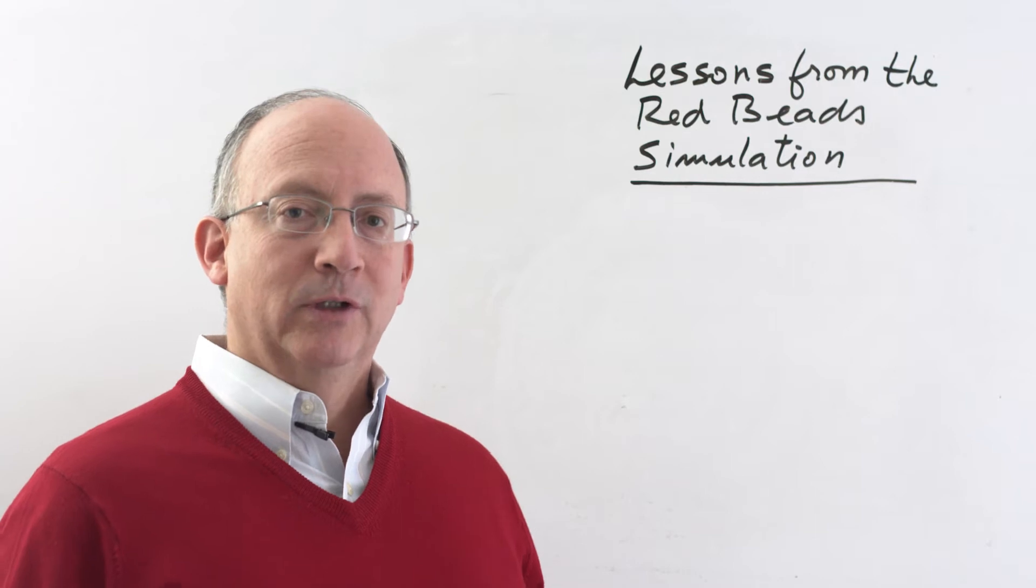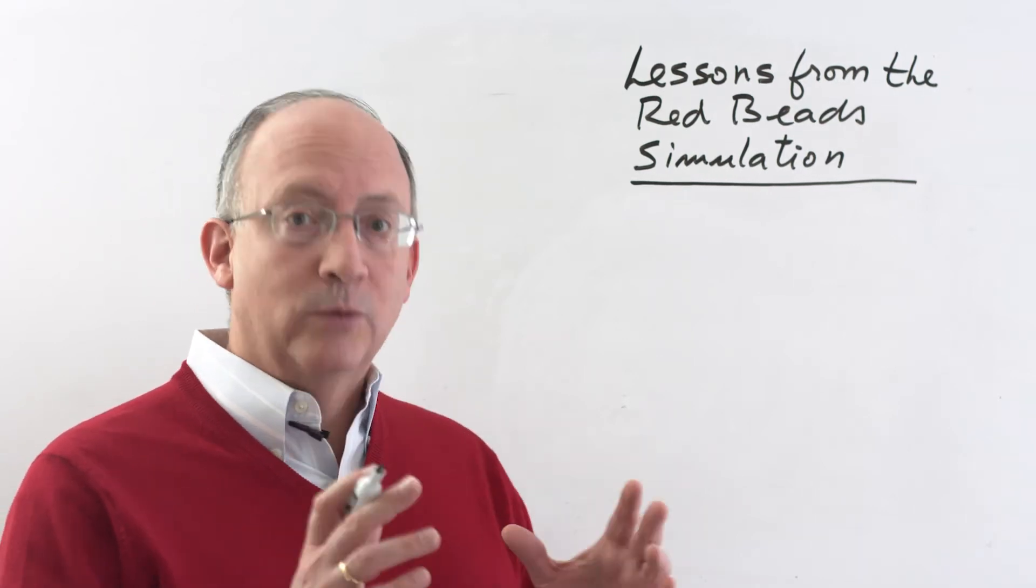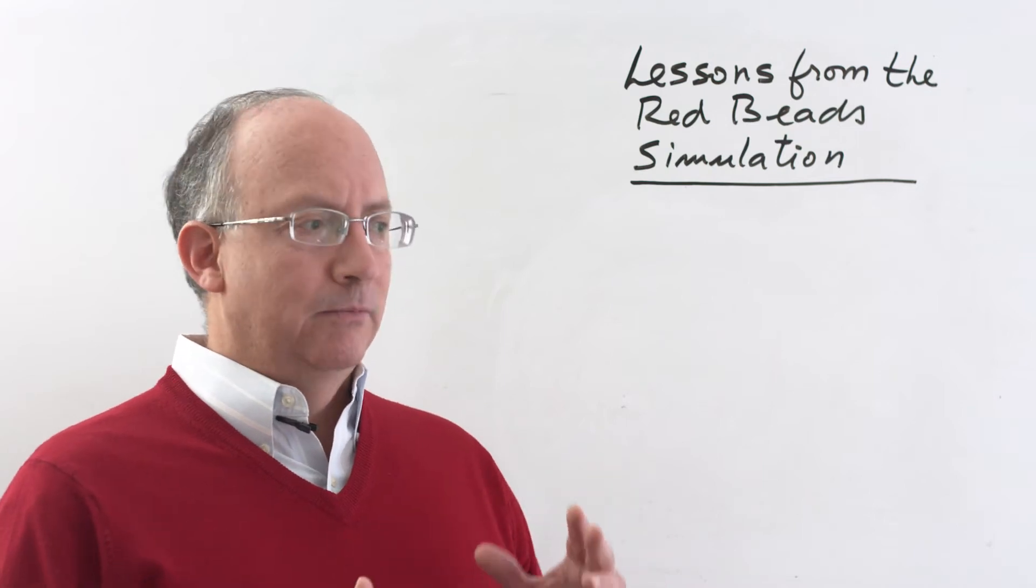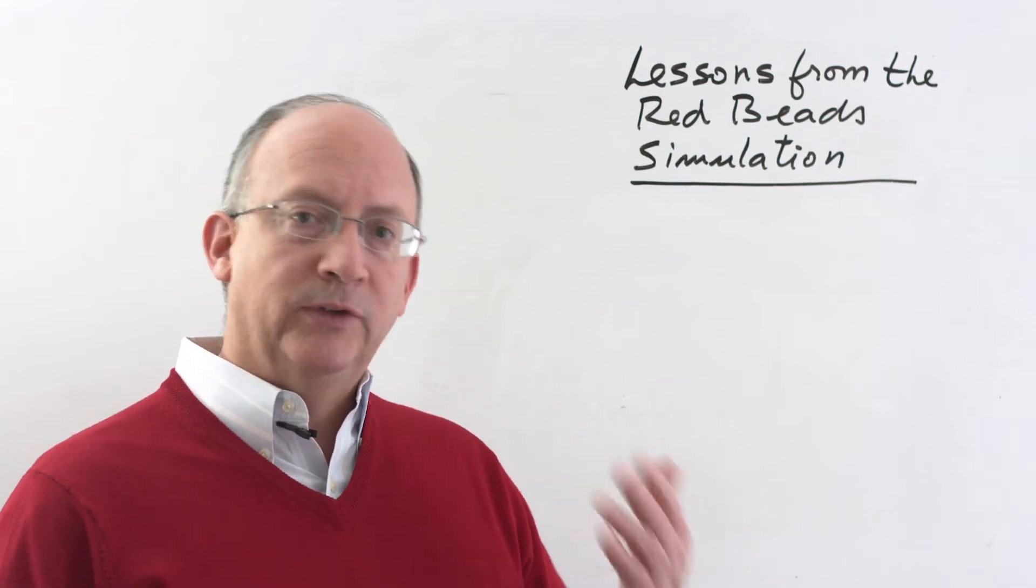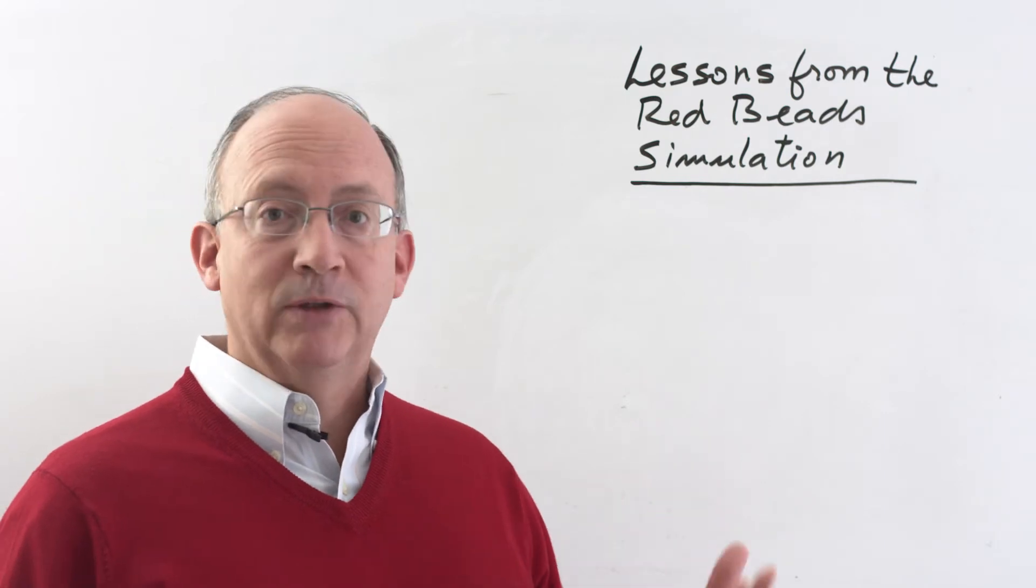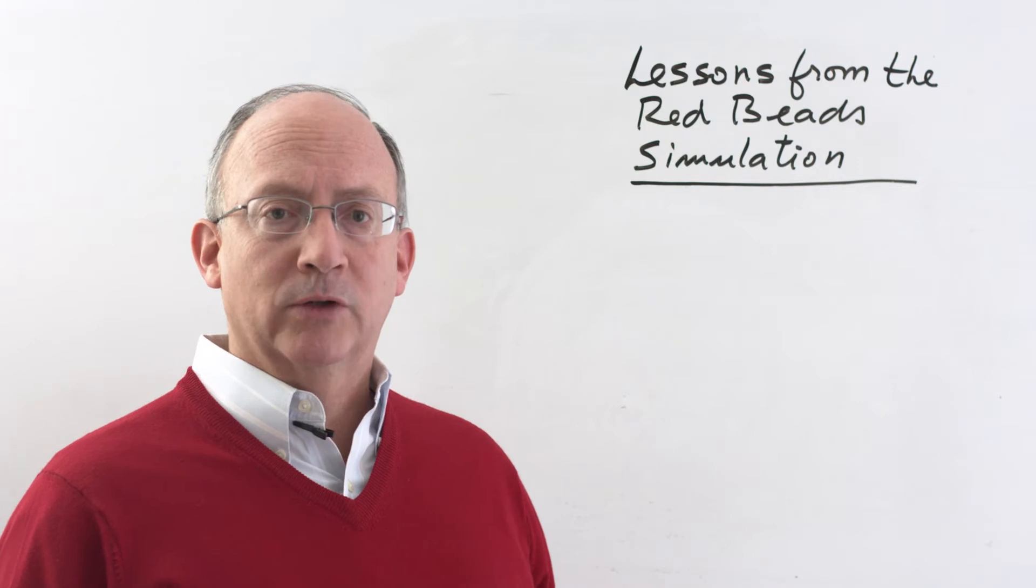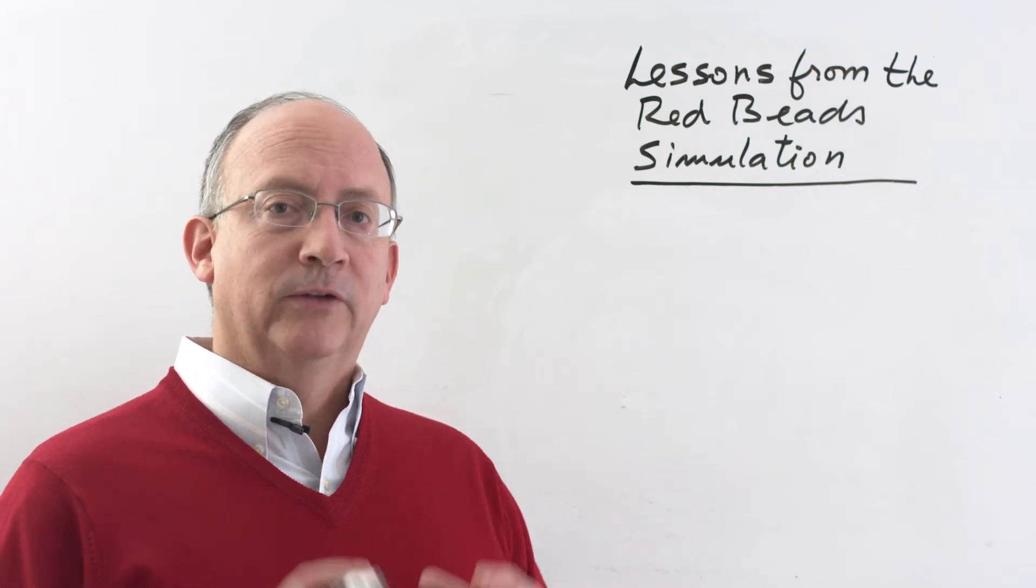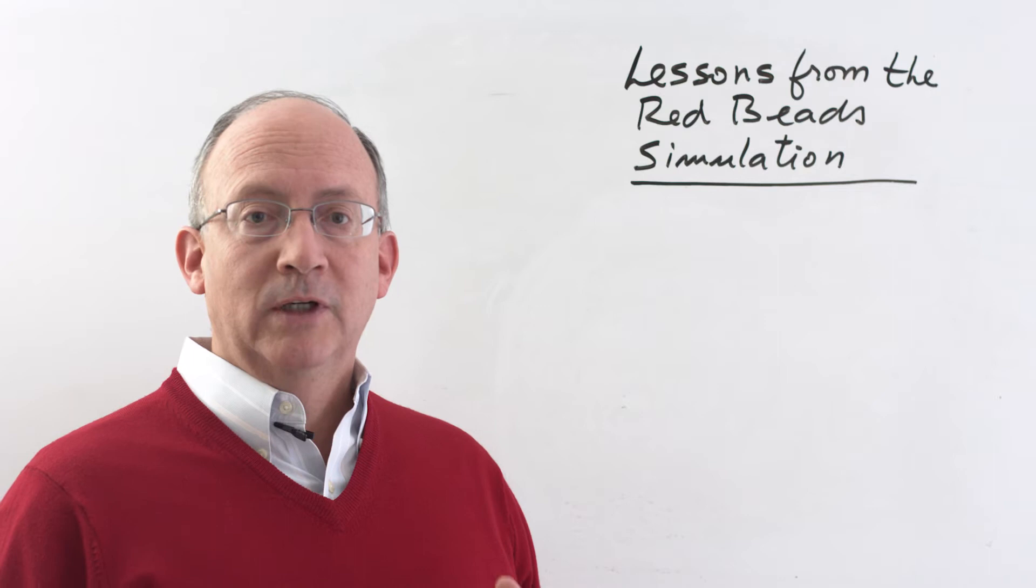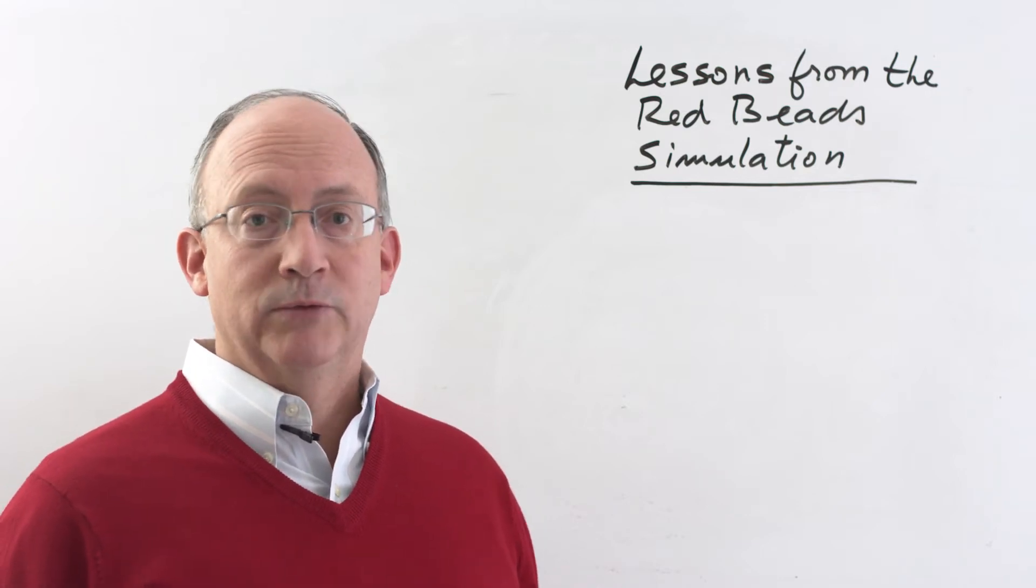So what is the system of production? If it is true, as I just said, that the variation that we saw in the Red Beats really was due more to a system of production, much more so than to the relative merits of the various workers, then what is a system of production? Well, we're going to define a system as a set of factors or causes that work together to accomplish a certain objective, a common objective.